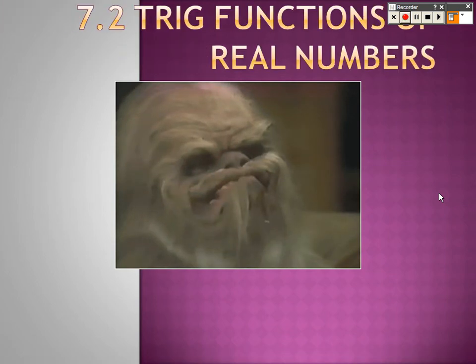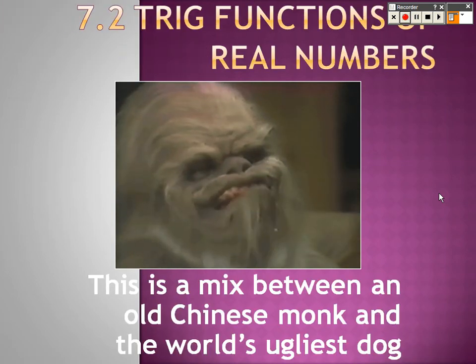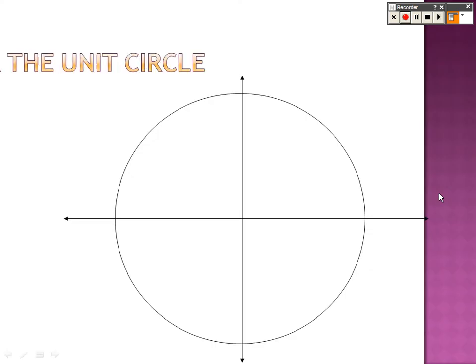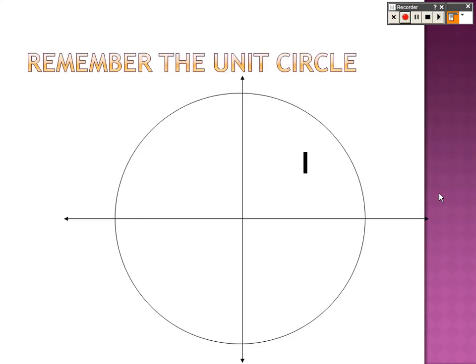Okay, so we are on 7.2 trig functions of real numbers. We're remembering the unit circle from the last chapter in 6 and from the last section that we just did in 7.1. Remember these are the quadrants, 1, 2, 3, and 4.